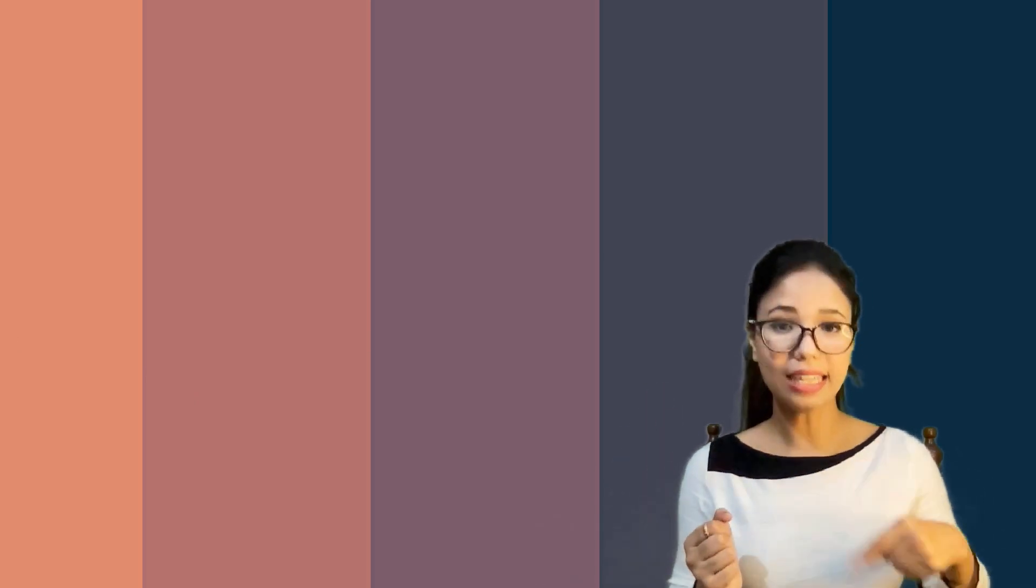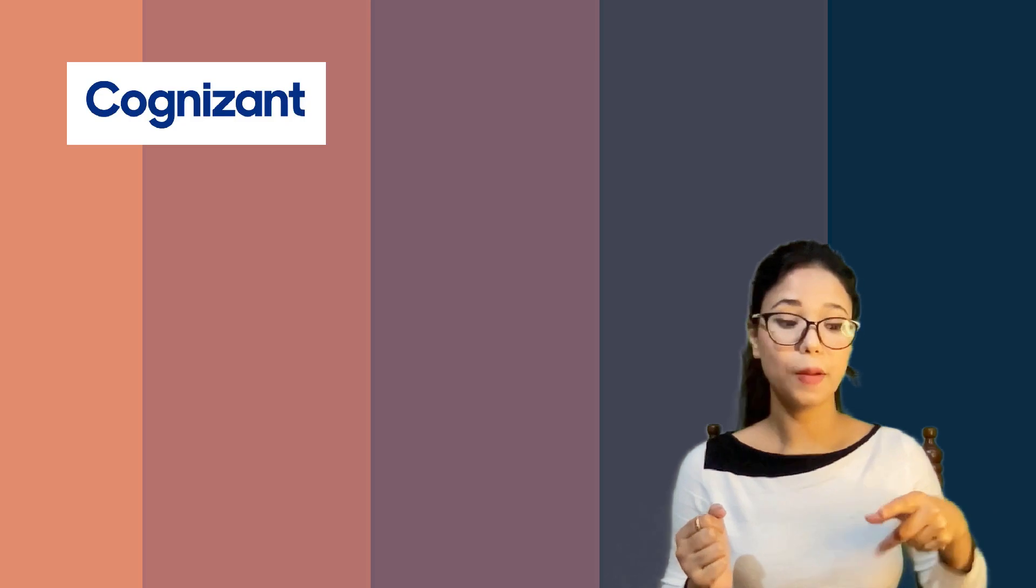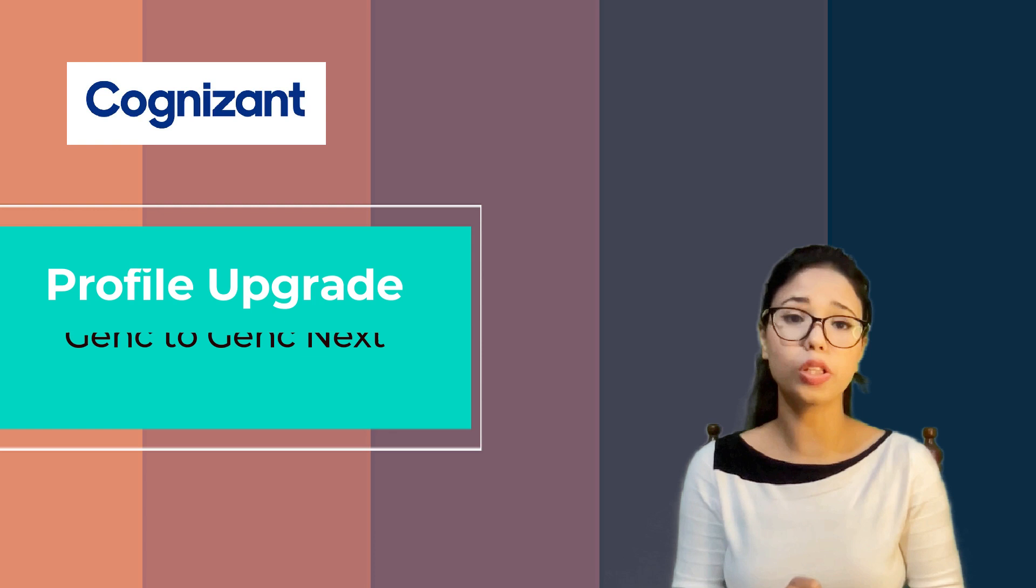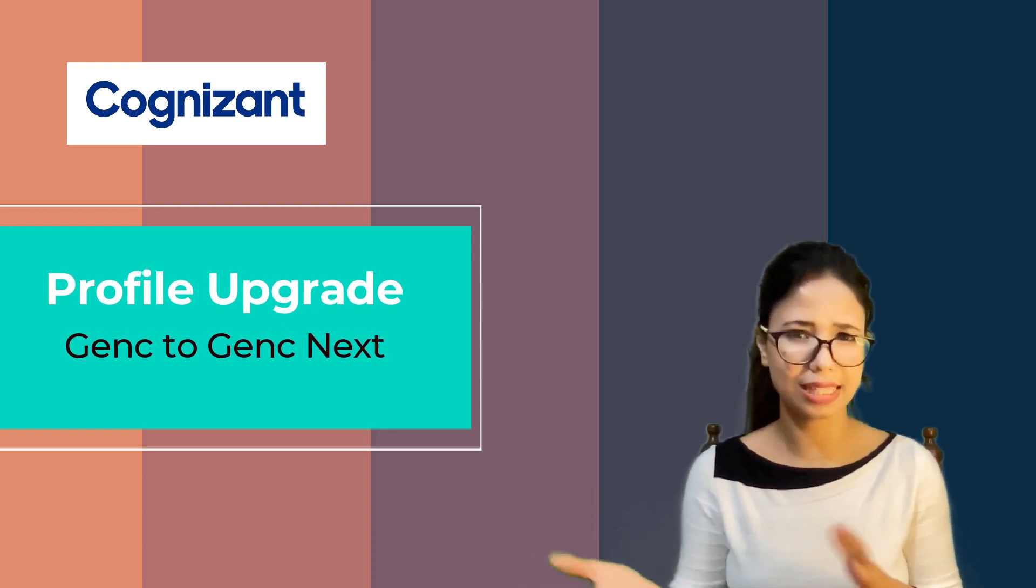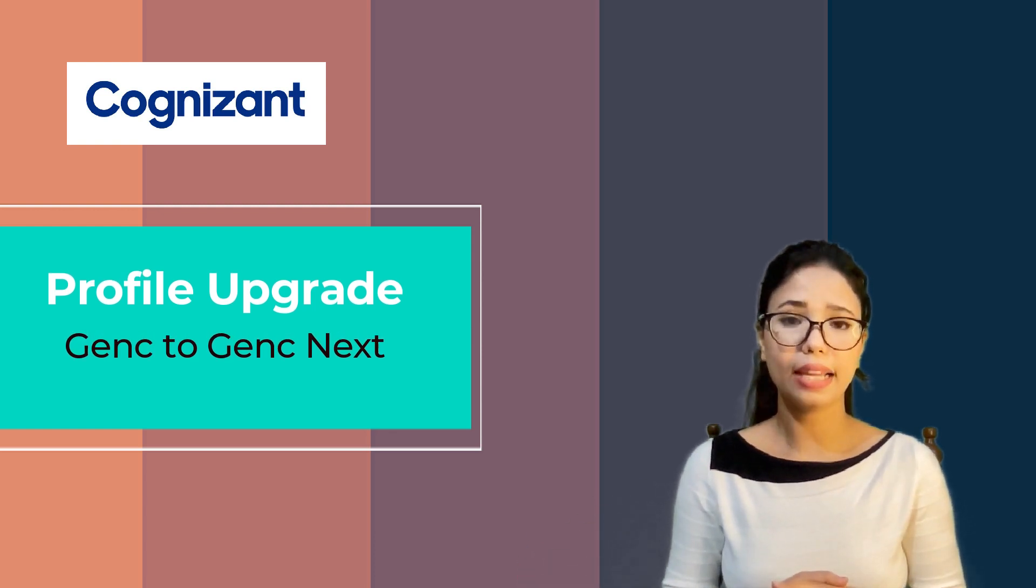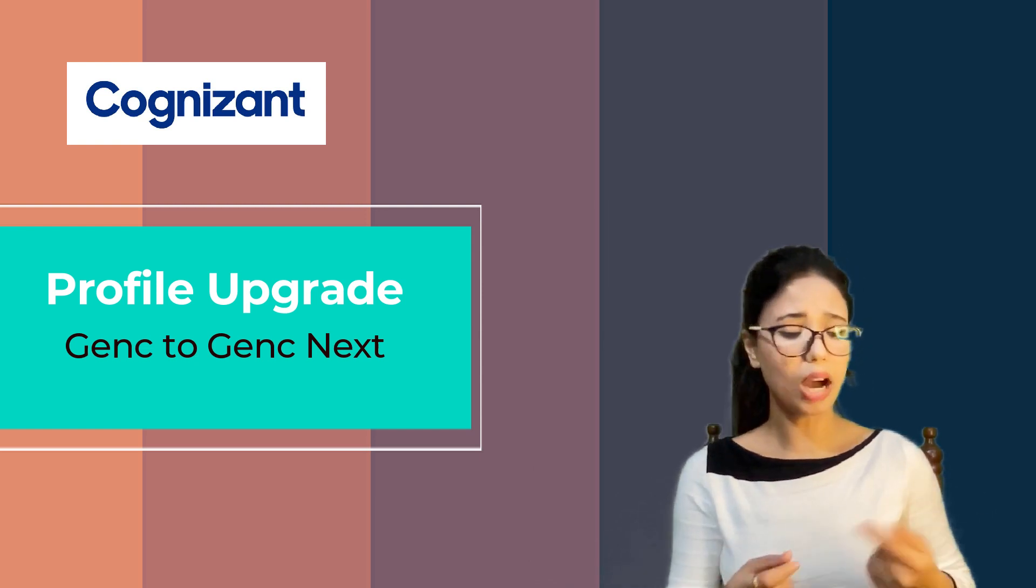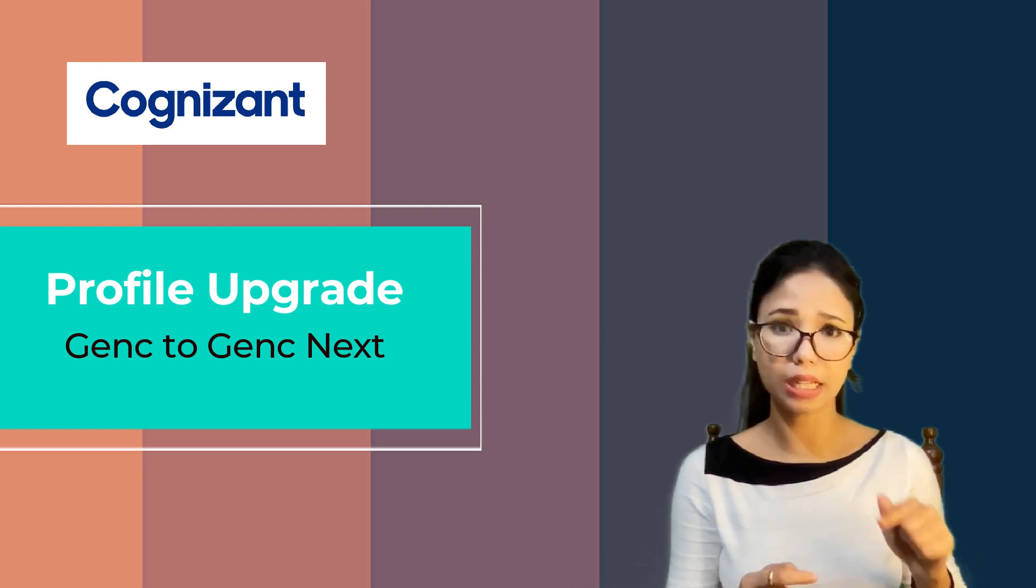And the Gen C Next people are getting directly hired as an Associate level, means two roles above. That's why their package is also 6.5 or 6 LPA, right? And the Gen C people have 4.5 package. So after one year, Gen C people will become PA.